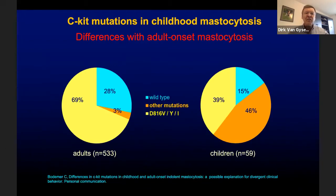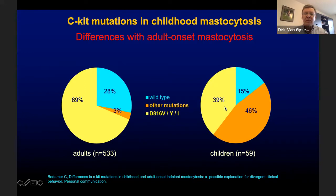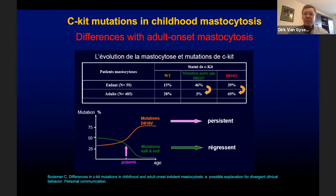Comparing CKIT mutations in childhood versus adult-onset mastocytosis reveals striking differences. Mutations inside codon 816 were found in 69% of adult-onset mastocytosis and only 39% of childhood mastocytosis. Conversely, other mutations — mainly in exons 8 and 9 — were found in 46% of childhood mastocytosis and only 3% of adult-onset mastocytosis. These differences in CKIT mutations may explain the divergent clinical behavior, with childhood mastocytosis being more likely to regress.